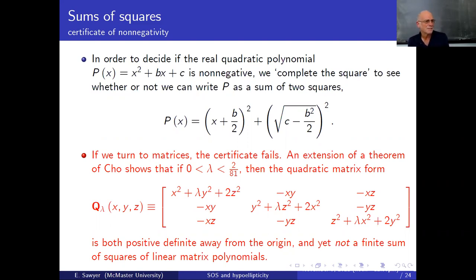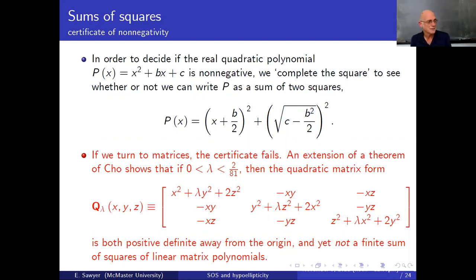Yet it's not a finite sum of squares of linear matrix polynomials. This is in the context of polynomials. The proof, following Cho, is: you simply suppose it is a sum of squares of matrix polynomials, play with coefficients, keep track of everything neatly, and you see there's a contradiction for lambdas in that range.